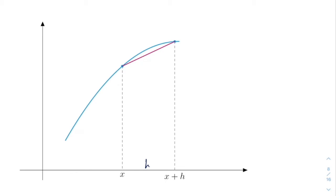So remember the value of the function here will be f of x and here it will be f of x plus h. So in this case the average rate of change will be as we've been computing, f of x plus h minus f of x divided by h.